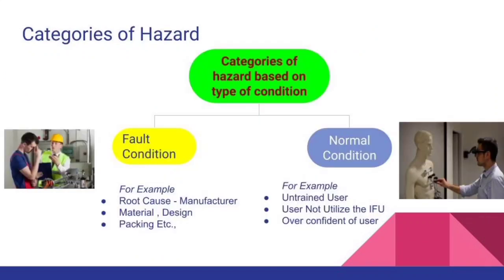Hazards are further classified into two categories: fault condition and normal condition. For fault condition, hazards are caused by manufacturer error — like design failure, wrong material selection on the devices, insufficient packing material quality, and so on. Basically, the fault condition is completely based on the manufacturer side error.